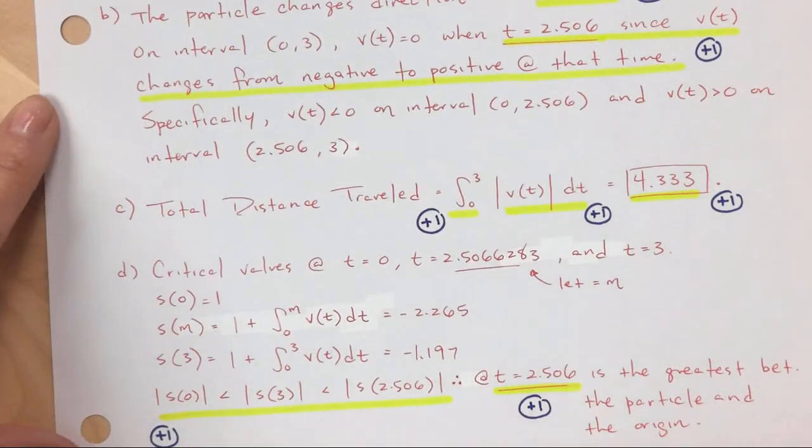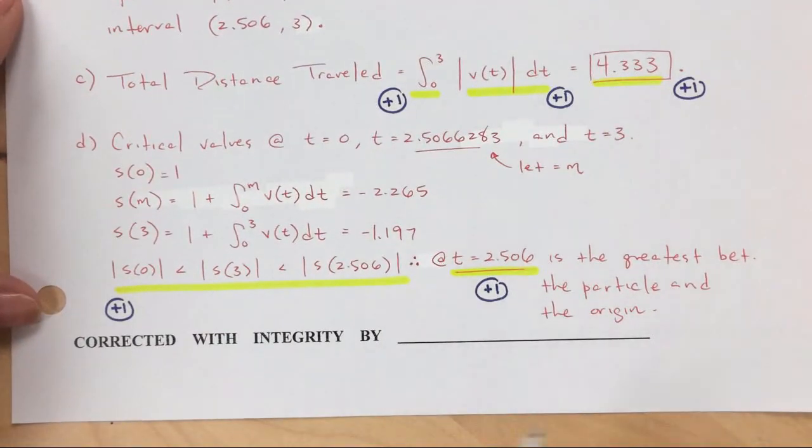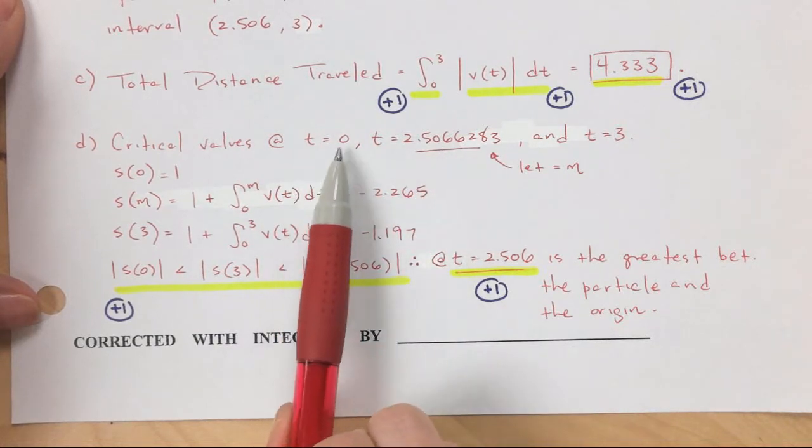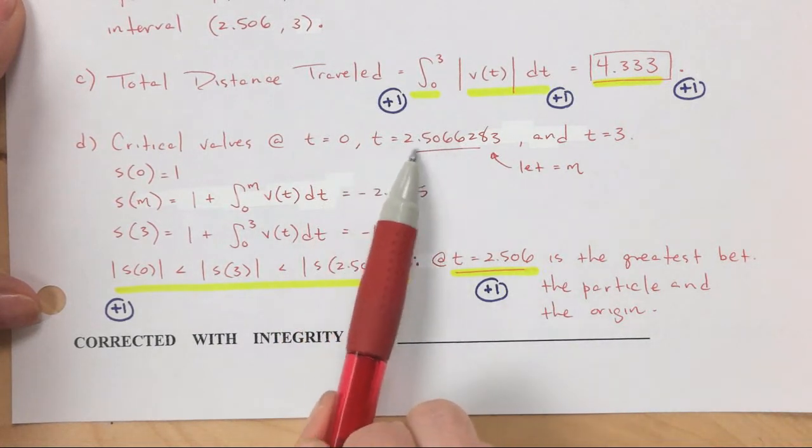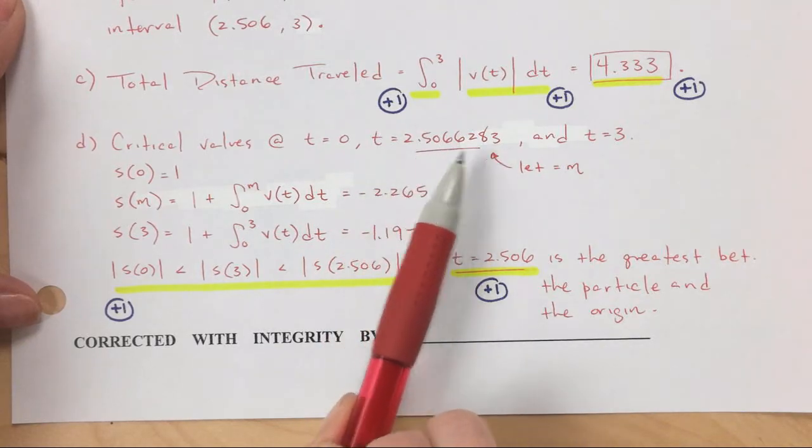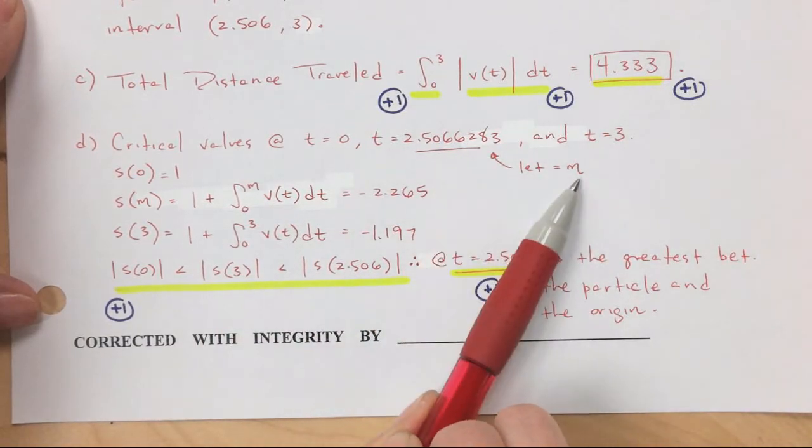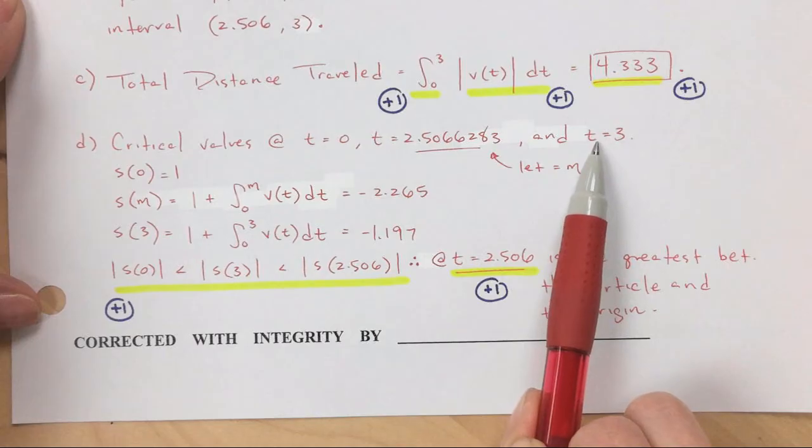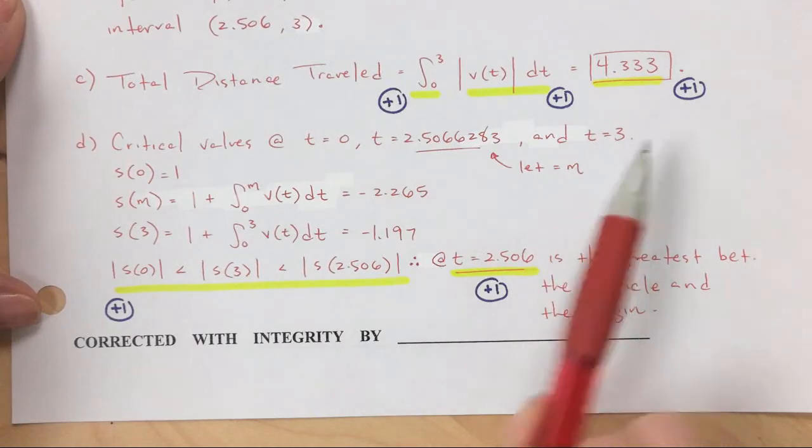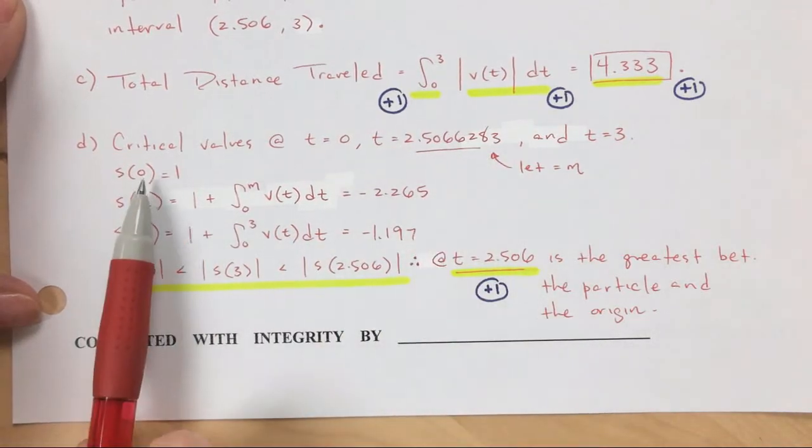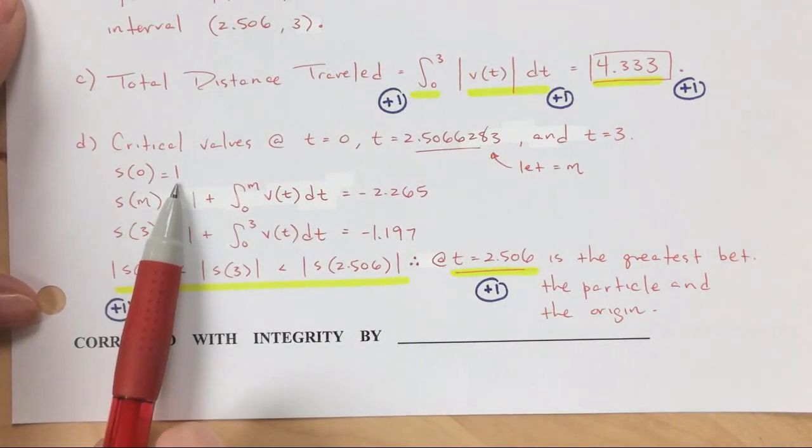So basically, I'm looking for my critical values. And I already found that critical value. So t equals 0, and then t equals 2.5. And I wrote out that whole thing because now I realize that I need to use that value to find another answer. So I'm going to let that equal m, just to give it another letter. And then I need my t equals 3. So I'm going to find how far am I, how far am I, how far am I. So again, at 0, you're 1 unit away. It says the position is x equals 1.